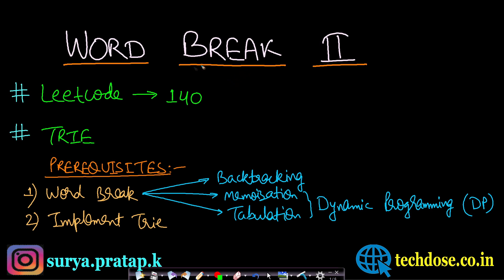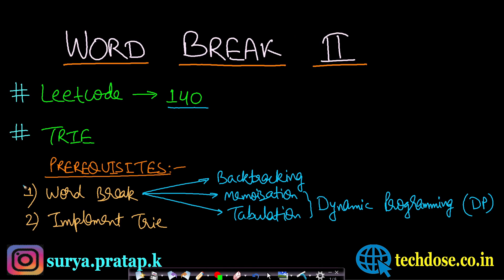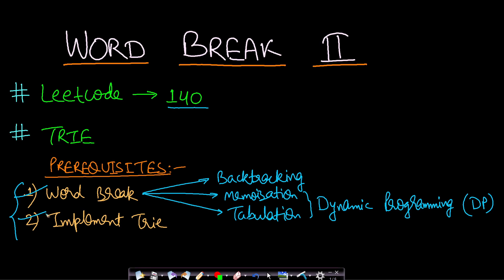Hello guys, welcome back to TakeDose. In this video we will see the Word Break 2 problem from LeetCode number 140. The prerequisite before watching this problem is to watch two of my videos: one is the Word Break problem where I explained the backtracking approach, memoization DP, and tabulation DP. The second is implementing Trie — it will be better if you watch my Trie playlist. All links are in the description. In this video I will not be explaining the dynamic programming approach; instead I will talk about the Trie approach.